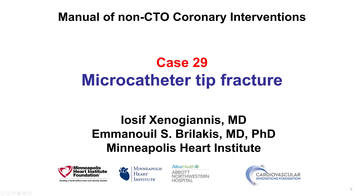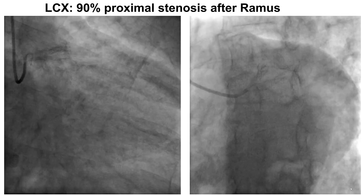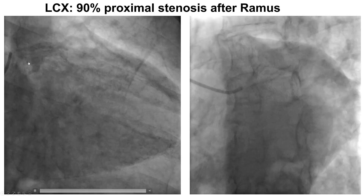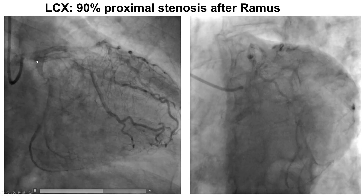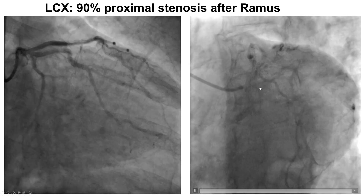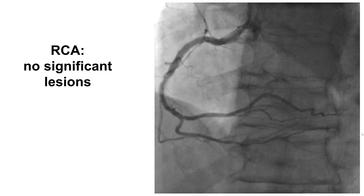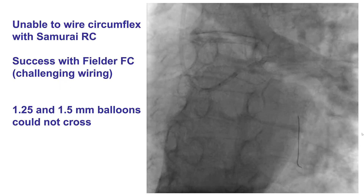This is Yosif Ksenogyanis and Manos Brilakis from the Minneapolis Heart Institute and the Cardiovascular Innovations Foundation, presenting case 29 for the Manual of Non-CTO Coronary Interventions. This is a case of a balloon uncrossable lesion complicated by microcatheter tip fracture. The patient presented with stable angina and had multiple prior PCIs in the circumflex, Ramus, RCA, and LAD. Diagnostic coronary angiography demonstrated a severe lesion at the origin of the circumflex, just distal to the large Ramus branch that had previously been stented. There was no significant disease in the LAD, only an intermediate lesion, and the right coronary artery also did not have significant disease. Therefore, the plan was to treat the ostial circumflex.